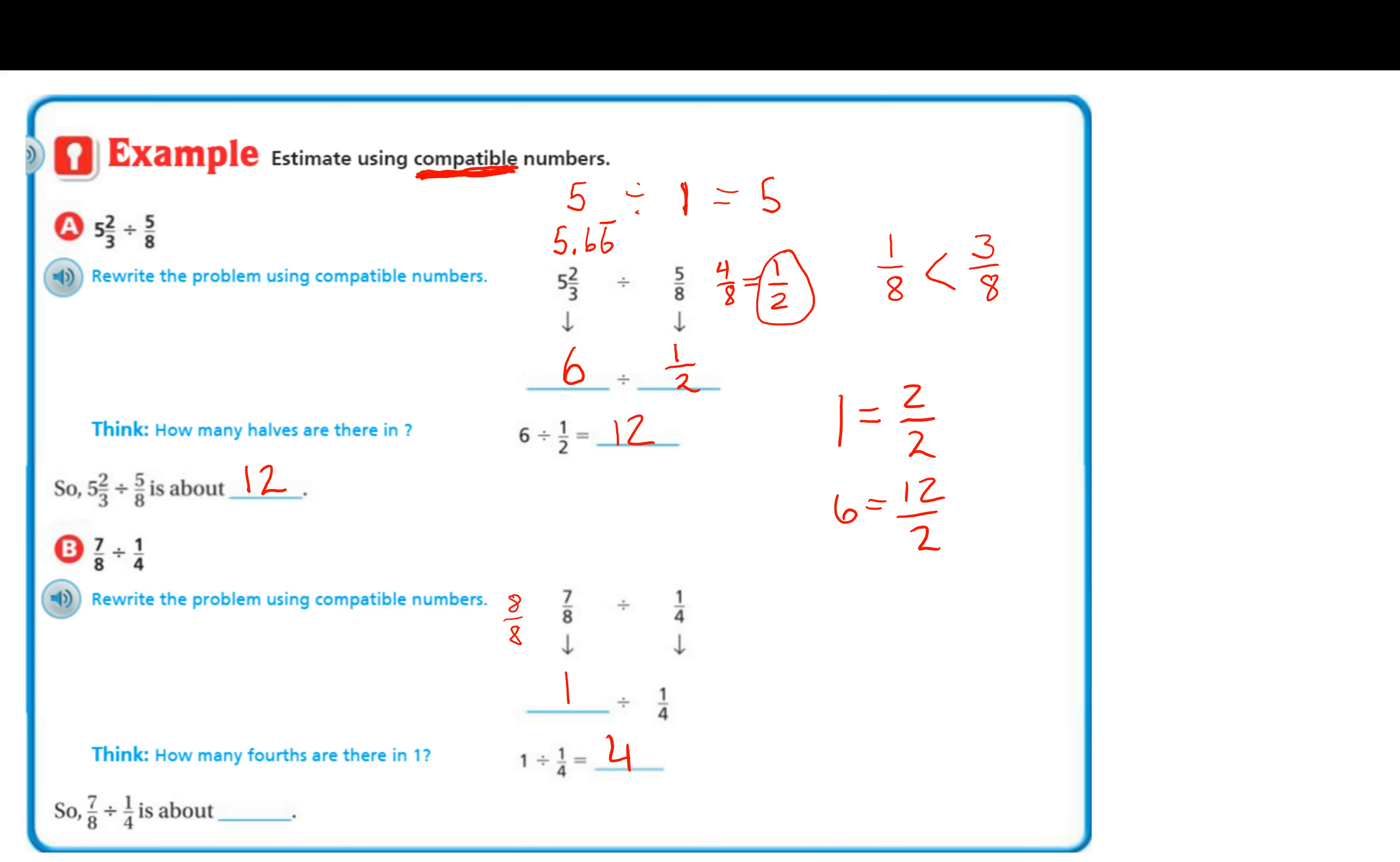How many fourths are in one? If we take 1/4, plus 1/4, plus 1/4, plus 1/4, we're at one whole, or 4/4. Okay, so 7/8 divided by 1/4 is about four.